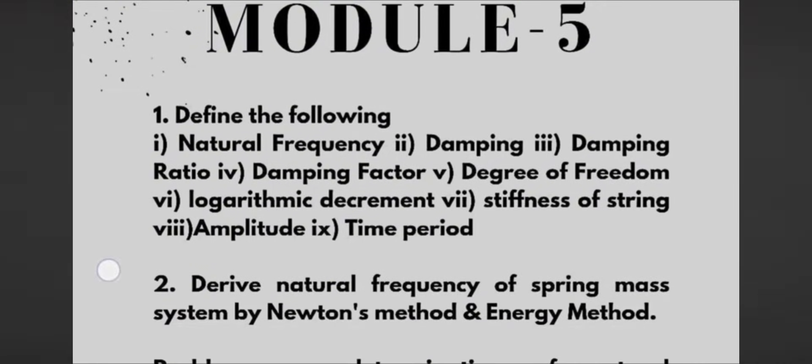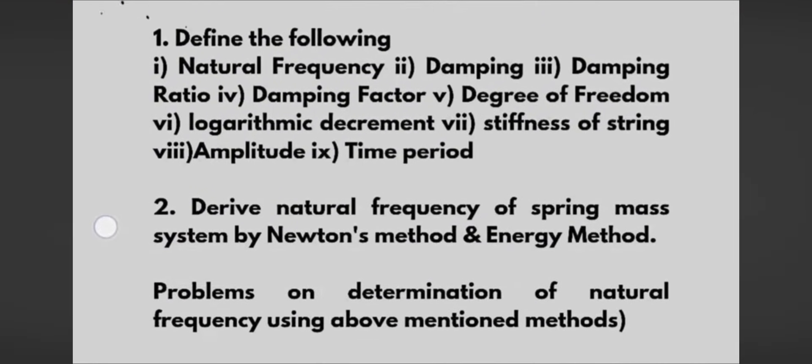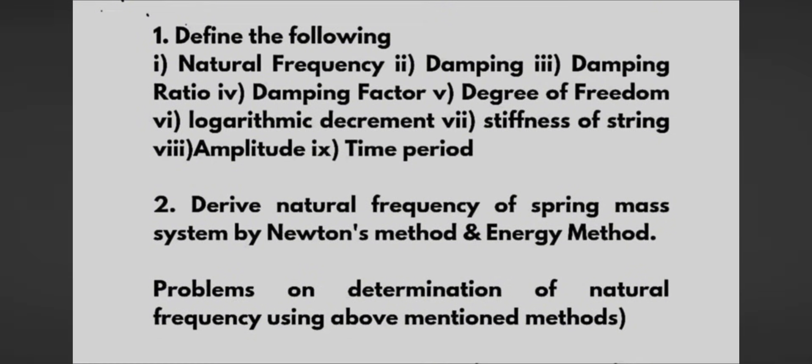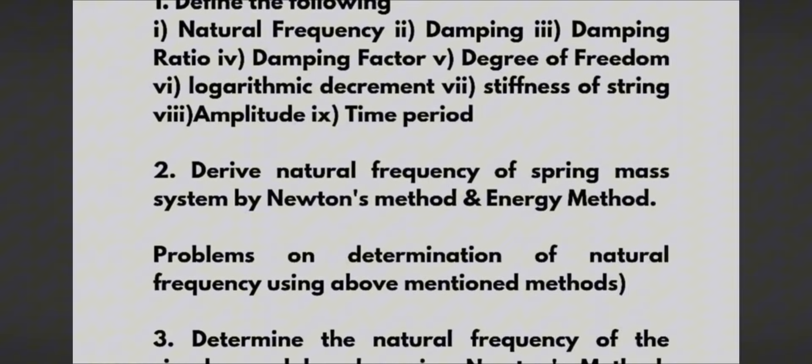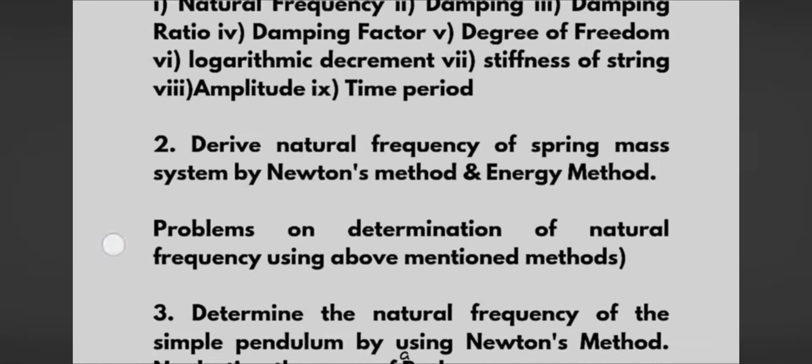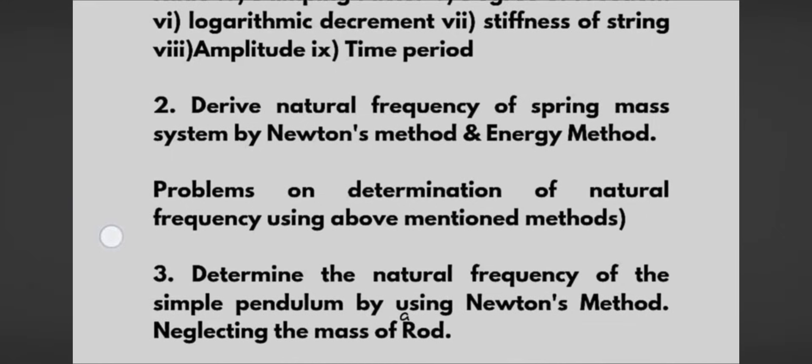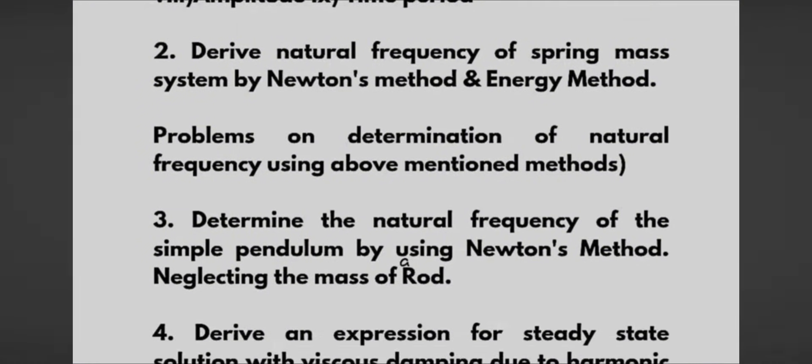First of all, Module 5 is the passing module in which you have to go through simple definitions like natural frequency, damping, damping ratio, damping factor, degree of freedom, logarithmic decrement, and stiffness of spring, amplitude and time period. This may be a nine marks question. Next one we have a super important question, definite question which will surely be asked: derive natural frequency of spring mass system by Newton's method and Energy method. Next, problems on determination of natural frequency using above mentioned methods.